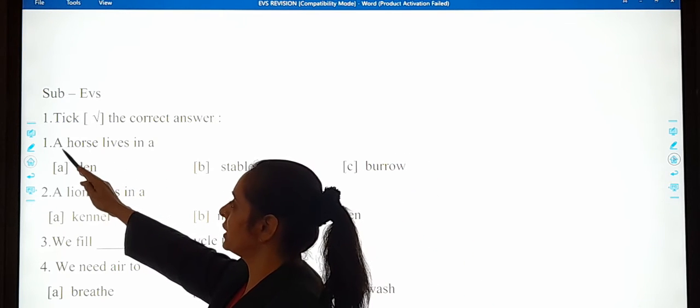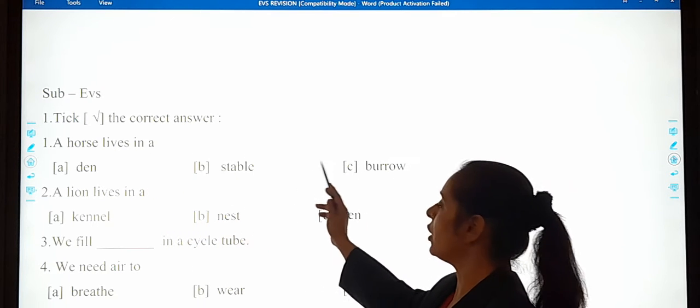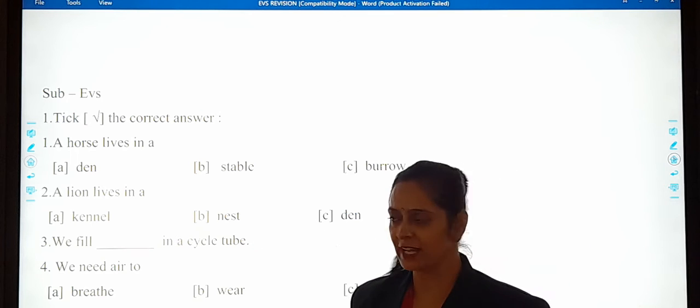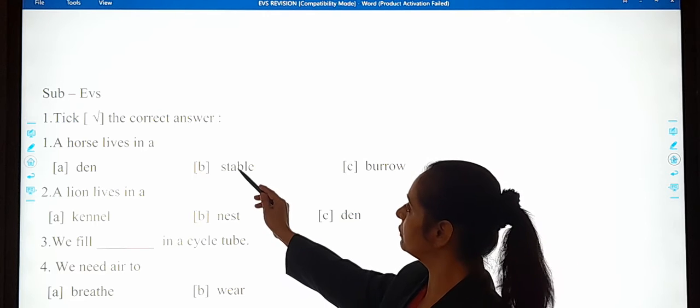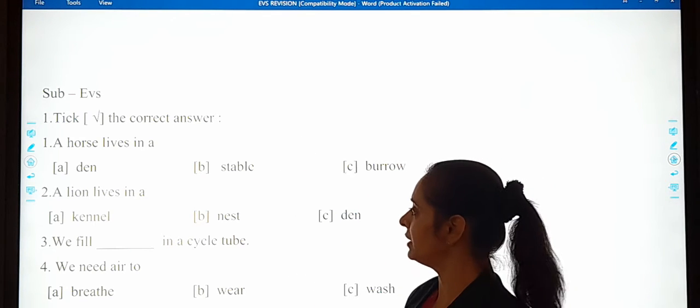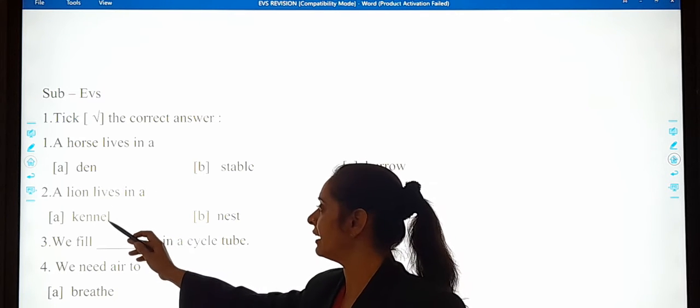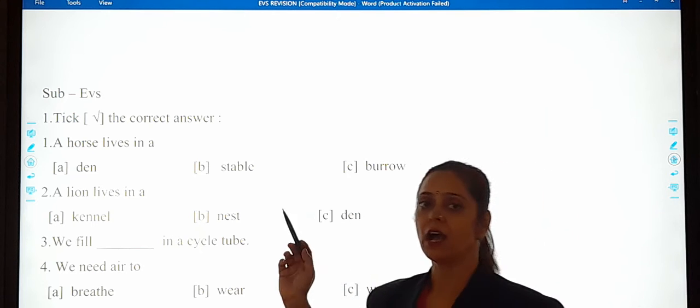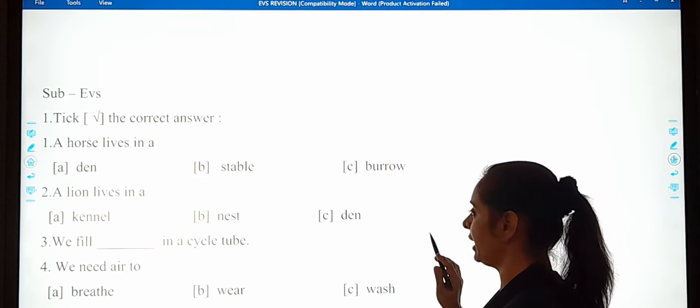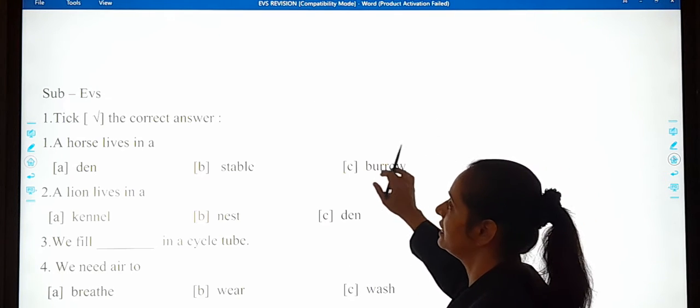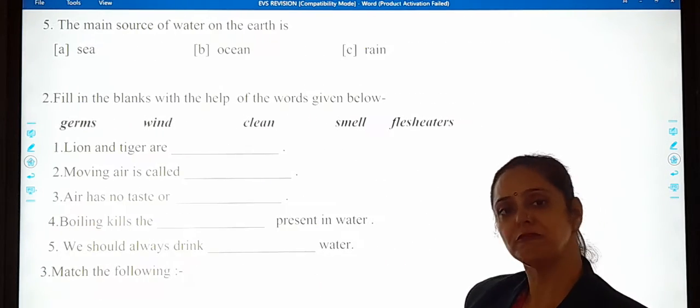As you are doing always, the first one is: a horse lives in a den, stable or barrow. So horse kithar rehta hai? You have to think and then you will tick on your answer. And the next one is, a lion lives in a kennel, nest or den. Aap ko sooch na hai, first think and then do the tick mark. So in this way you will be getting, take the correct answers. That will be of five marks.